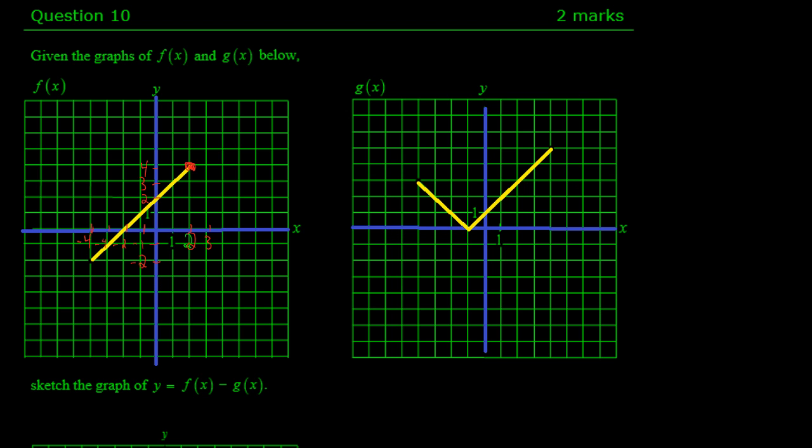So we clearly want to label these endpoints, because I'm sure these endpoints are important. This is (2, 4), and this is (negative 4, negative 2).